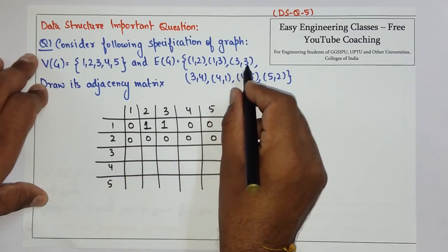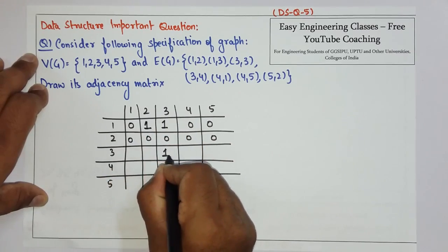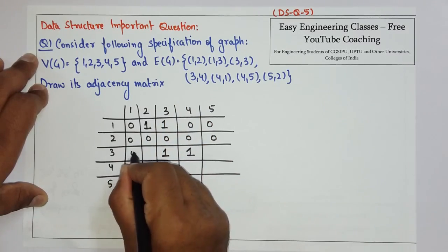Then from 3 there is 1 edge to 3 itself. So 3 to 3. 1 and 1 from 3 to 4. And all the others are 0.